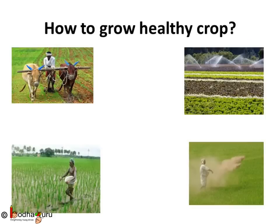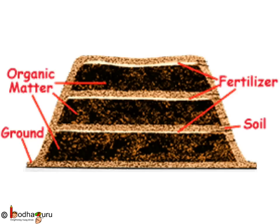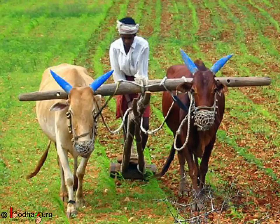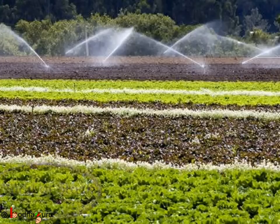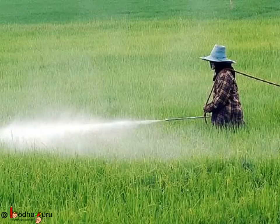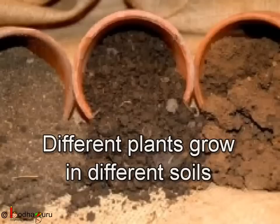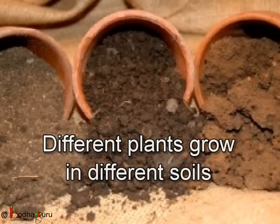So, you must have seen how much needs to be done for getting a good crop: preparing good soil, sowing good seeds, adding the right amount of water, and spraying insecticides. Also, different plants need different types of soil. One should know what to grow, at what time, and the right technique.